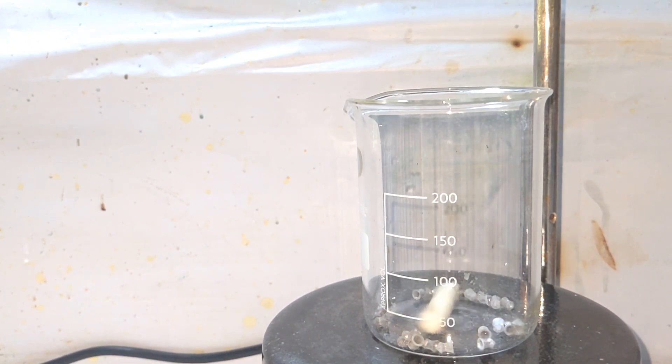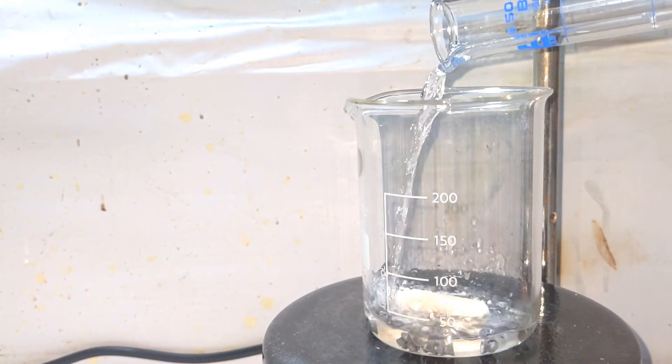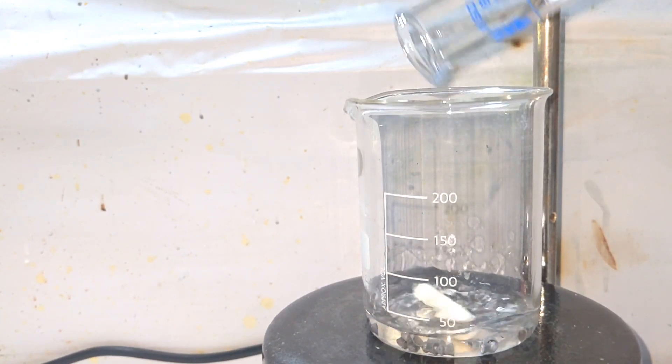Here I have taken 10 grams of lead metal shots in this 250 milliliter beaker. It's placed on a magnetic stirrer with stirring on. Into that was added 25 milliliters of glacial acetic acid.